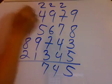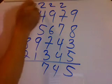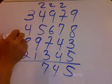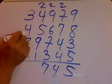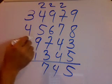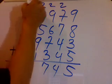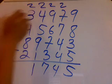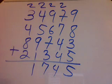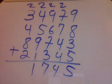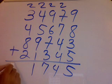Then 2 plus 4 is 6, plus 5 is 11, plus 9 is 20, plus 1 is 21. Then 2 and 3 is 5, plus 4 is 9, plus 8 gives 17, plus 2 gives 19.